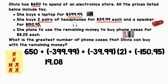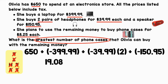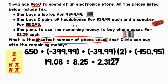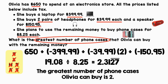This means that Olivia has $19.08 left after she bought the laptop, the two pairs of headphones, and the speaker. Now, looking back at the word problem, she's going to buy phone cases for $8.25 each, and we need to find the greatest number she can buy. So we're going to divide $19.08 by $8.25 to break the remaining money into groups of $8.25. When we divide, we get 2.3127 repeating — those two digits 27 repeat infinitely. This tells us Olivia can buy two phone cases and a little bit more of another. Since she can't purchase a partial phone case, the greatest number of phone cases Olivia can buy is two.